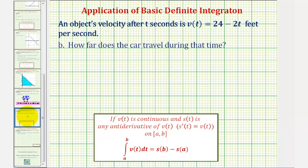For part B, we want to know how far the car travels during this time, which means how far it's traveled from t = 0 to t = 12. Before we answer this, let's look at the graph of our velocity function on the coordinate plane.